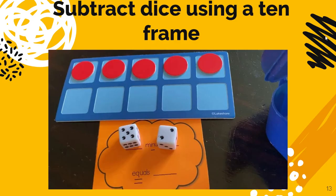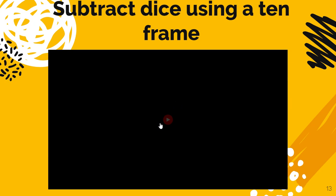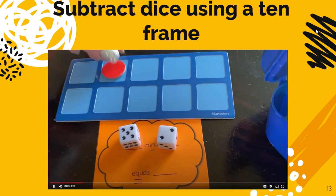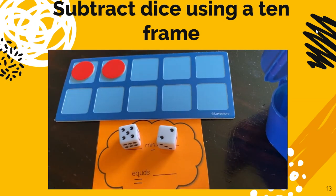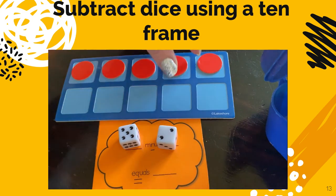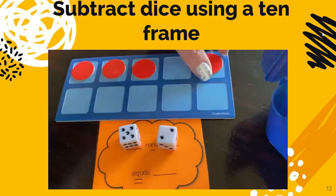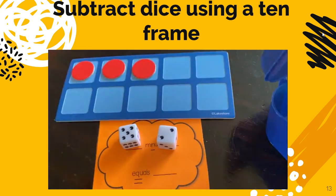Let's take a look at subtracting dice using a 10 frame. So we're going to look at this one which is 5 minus 2. So the first thing I'm going to do is put 5 markers on my 10 frame. And then, since it's minus, I'm going to take away 2 of them or get rid of 2 of them. And now I end up with 3. 5 minus 2 equals 3.